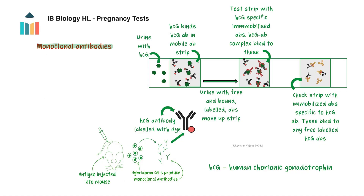These monoclonal antibodies are often labelled with a dye, allowing them to produce a visible signal when they bind to HCG. This is essential for creating the positive test result line on the test strip.